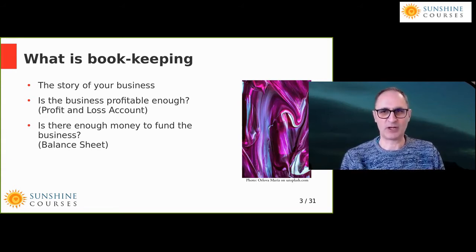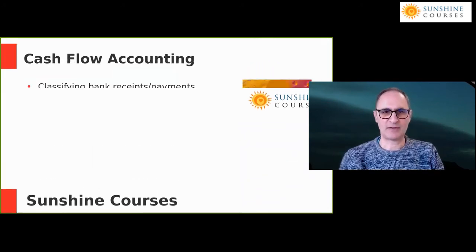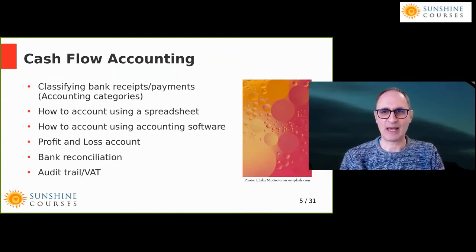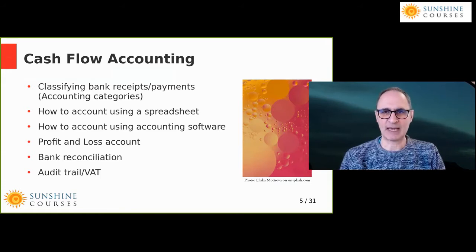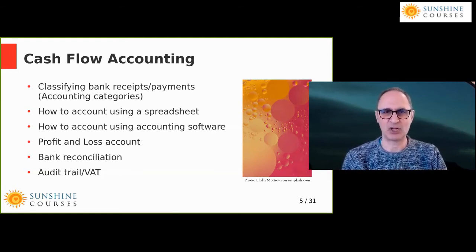So without further ado, we go straight to the first section: cash flow accounting. We'll cover classifying bank receipts and payments into accounting categories, how to account using a spreadsheet, how to account using accounting software, and then the profit and loss account. There are also two really important sections: how to pick up errors with a bank reconciliation, and an audit trail and VAT — a couple of specific items you need to get started with cash flow accounting.